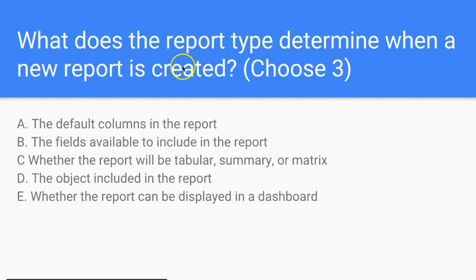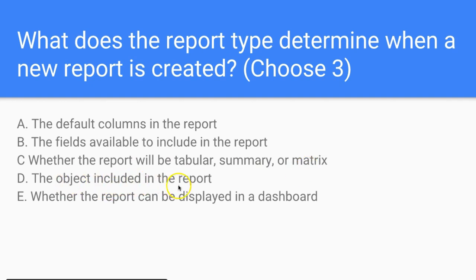Question: What does the report type determine when a new report is created? Choose three. A: the default columns in the report. B: the fields available to include in the report. C: whether the report will be tabular, summary, or matrix. D: the object included in the report. Or E: whether the report can be displayed in a dashboard.